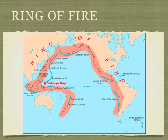Here's the picture of the Ring of Fire we were talking about earlier. There are a lot of volcanoes that occur within this region as well. So both earthquakes and volcanoes can occur quite frequently along this Ring of Fire.